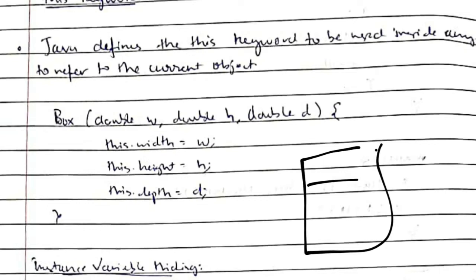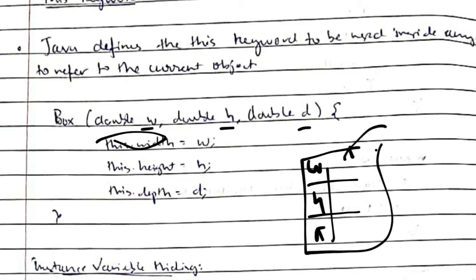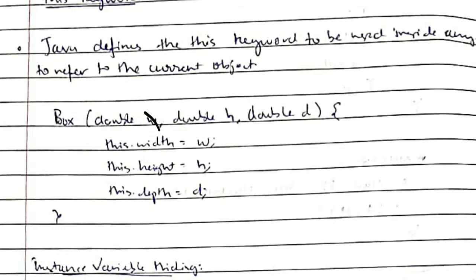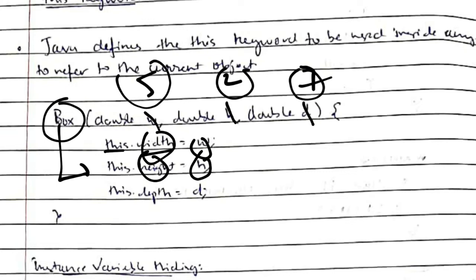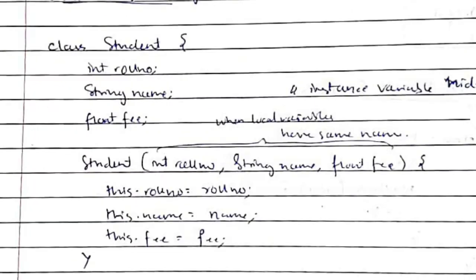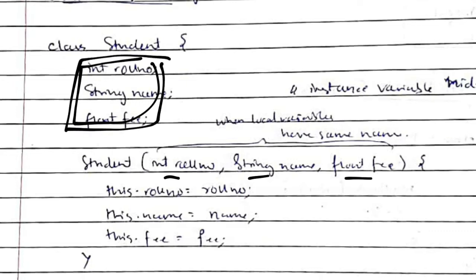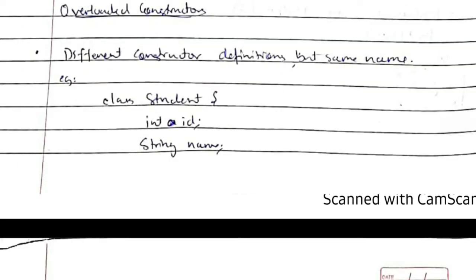When creating an object, we need to initialize the variables of that same object — for example, width, height, and depth. For this we use the 'this' keyword, which refers to the same object. So 'this.width = w', 'this.height = h', 'this.depth = d', where w, h, d are values like 5, 2, and 7. Sometimes class variables and function arguments have the same name; in that case the variable names get hidden, which is known as instance variable hiding.